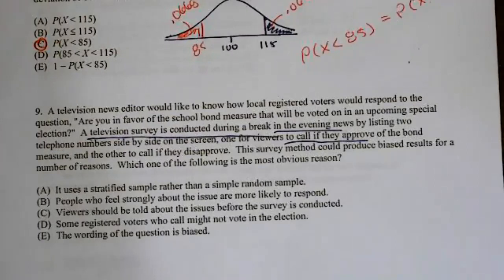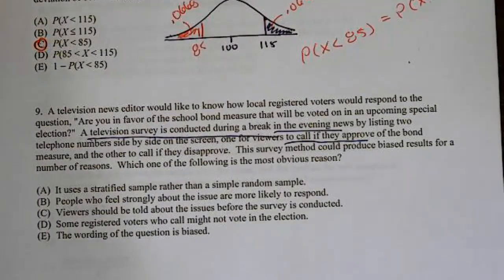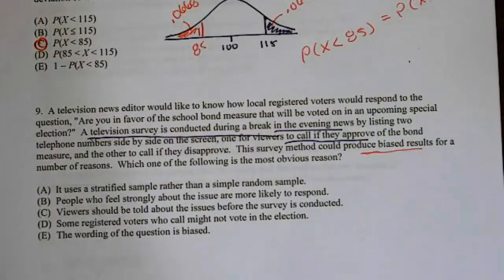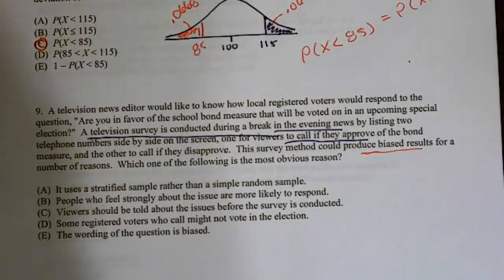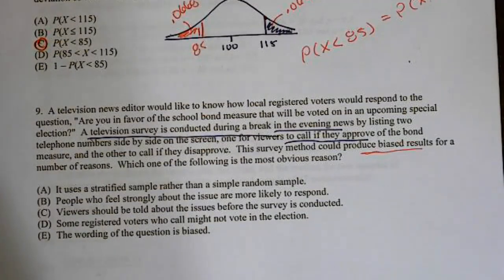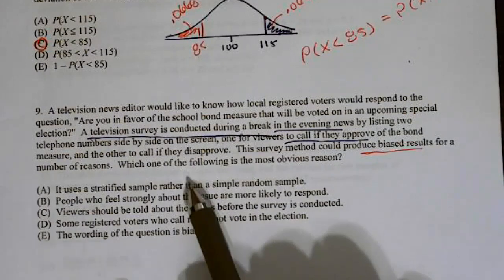Last one for this video. A television news editor would like to know how local registered voters would respond to the question, Are you in favor of a school bond measure that will be voted on in an upcoming special election? A television survey is conducted during a break in the evening news by listing two telephone numbers side by side on the screen, one for viewers to call if they approve of the bond measure and the other if they disapprove. The survey method could produce biased results for a number of reasons. Which of the following is the most obvious reason? Well first off, we have people who are watching the news and not everyone does watch the news and no one knows if they're watching that channel. But the biggest thing here is they self-selected, and the people who are going to vote are. This is going to be a case of voluntary response bias because we didn't randomly select them.